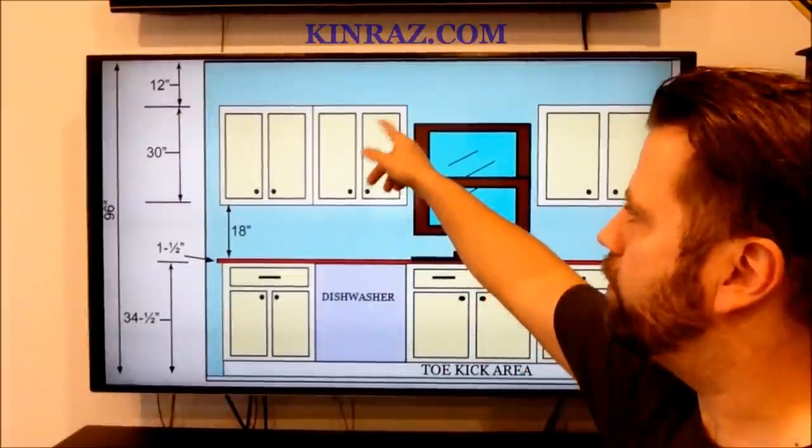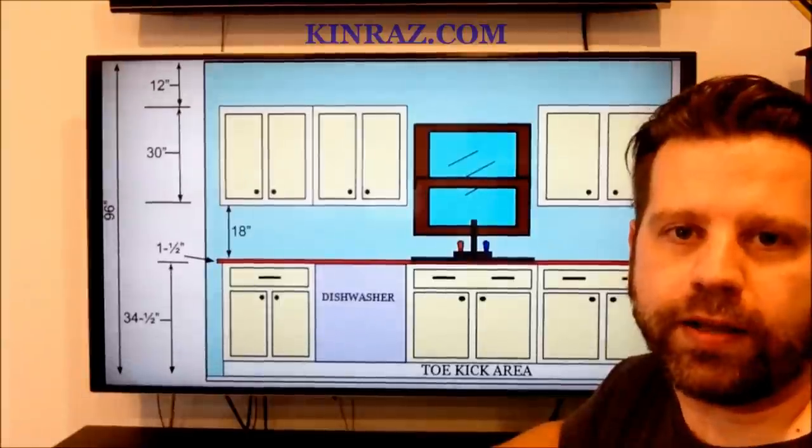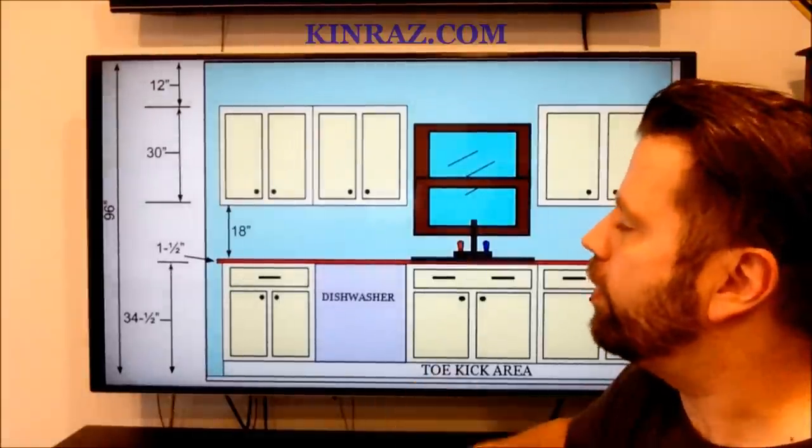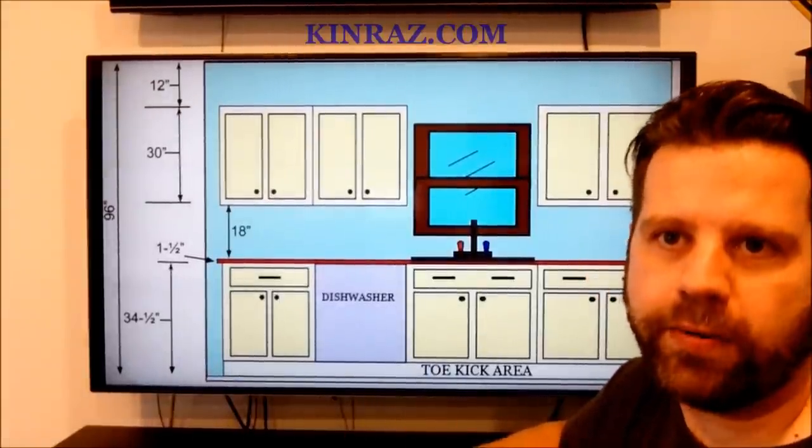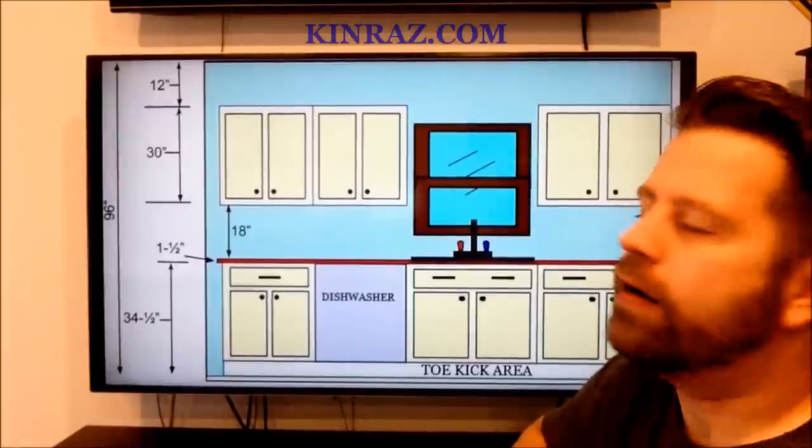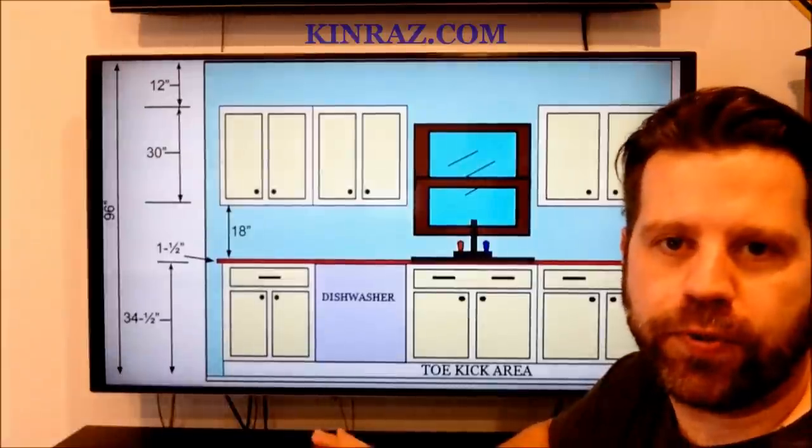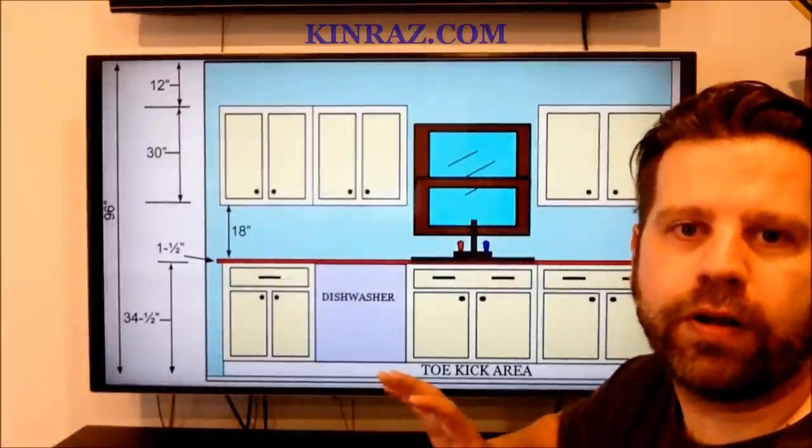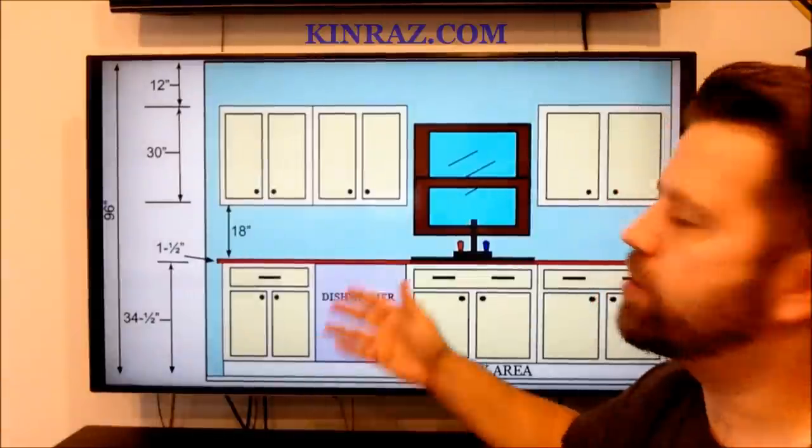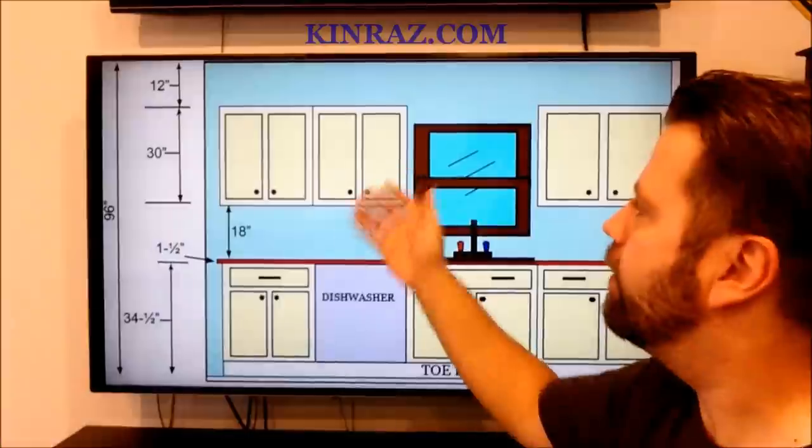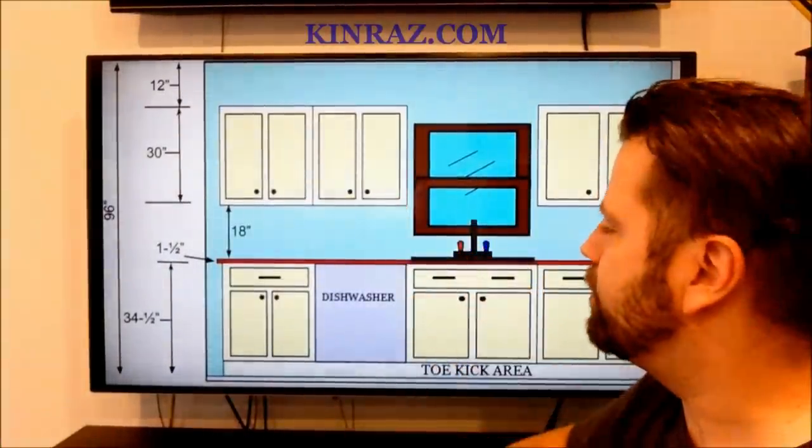Now up above your 30 inch tall wall cabinets, most of the time you'll see molding that goes up there—crown molding. Sometimes you'll see soffits that come out. Now if you don't know what soffits are, those are the drywall boxes that actually protrude out of the upper corner of the kitchen, and then those cabinets get butted right up to that. So that would finish out at 96 inches as well.